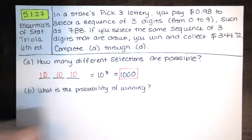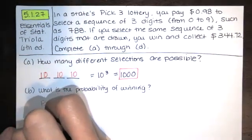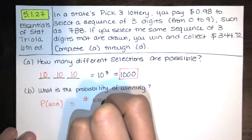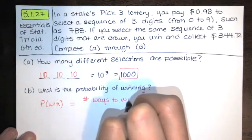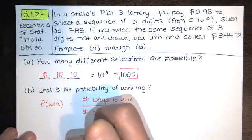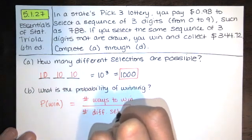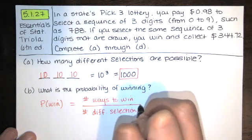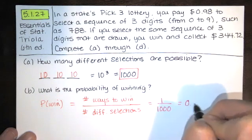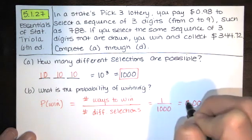So the probability of a win is the number of ways that you can win divided by the total number of different selections possible. So that's just one in 1,000 or one one-thousandth.